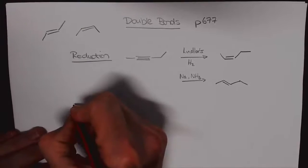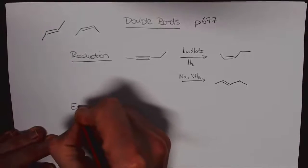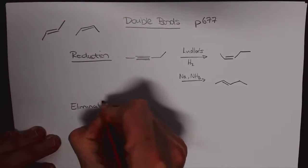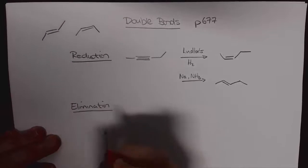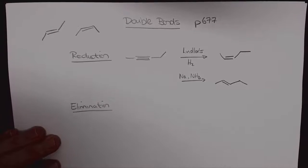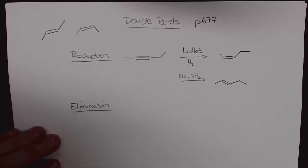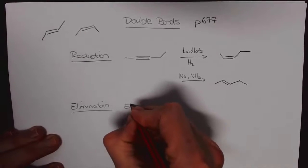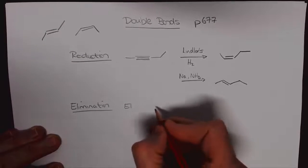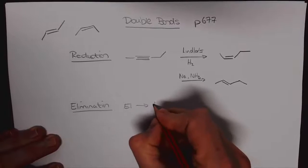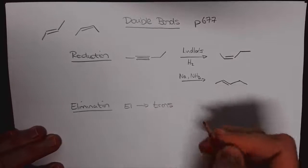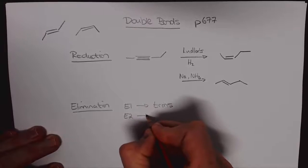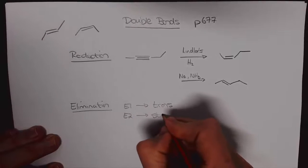Another way which we should already know is the elimination reaction. We can get a leaving group like bromine, do the elimination and get a double bond. If we do E1 elimination reactions these ones tend to go to trans double bonds because these are more stable but E2 eliminations are stereospecific.